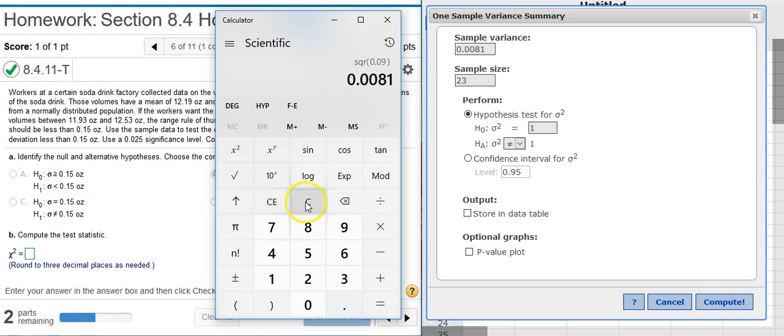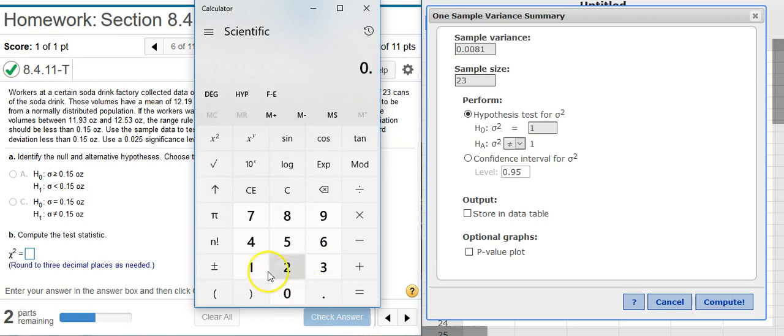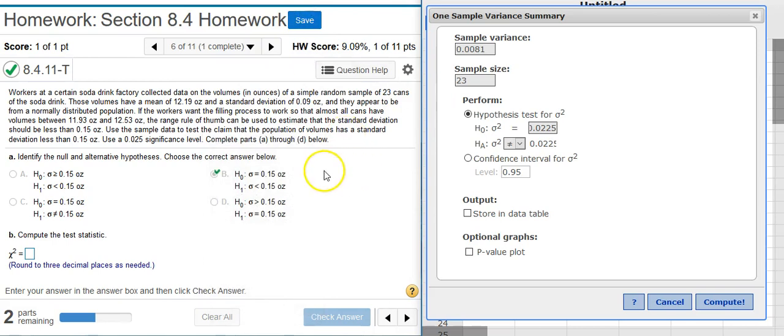So to do that, I pull back my calculator, and that was 0.15. I square it, and that's the number you want to stick in here for your claimed value for your hypothesis test. I need to make sure that this inequality sign matches here for my alternative hypothesis, and now I'm ready to go.